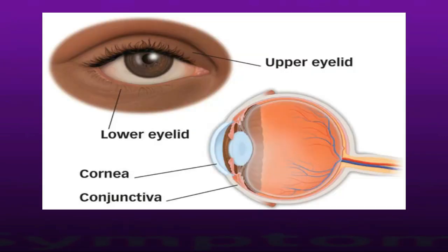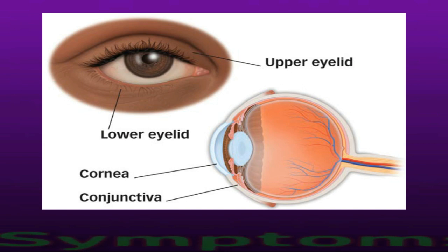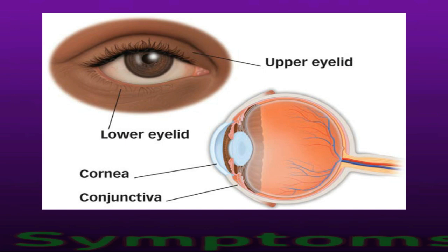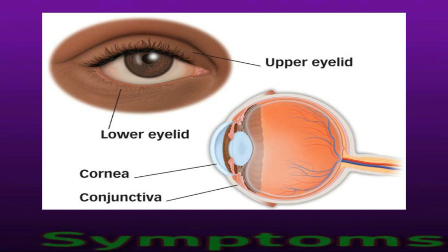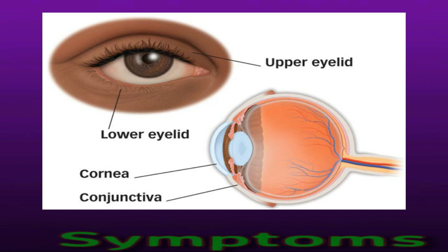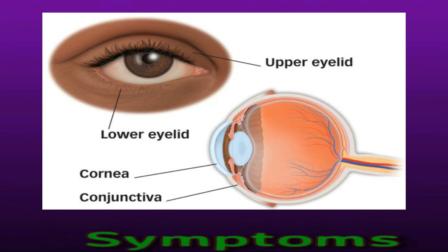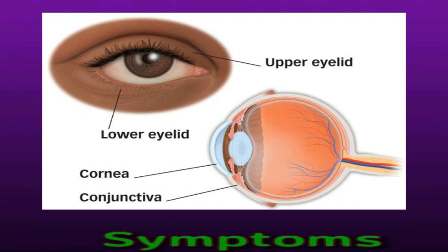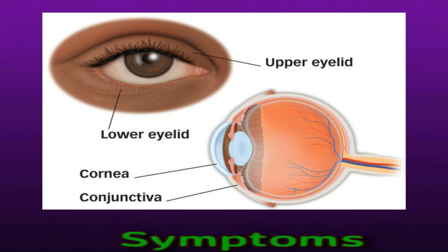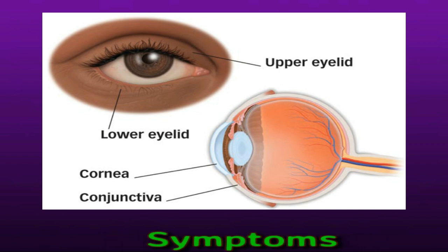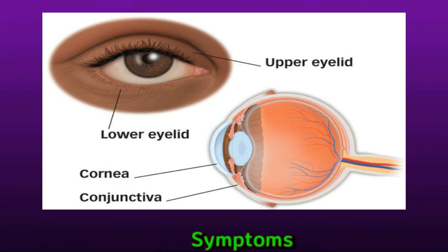Most people have contracted the virus at some point in their lives, but not everyone gets symptoms as a result. When a person gets herpetic eye disease, they can experience a variety of symptoms. This can sometimes occur in both eyes, but usually affects one eye more than the other. Some of the symptoms depend on the affected part of the eye. Examples of these symptoms include the feeling of something being in the eye, headaches, light sensitivity, redness, and tearing.